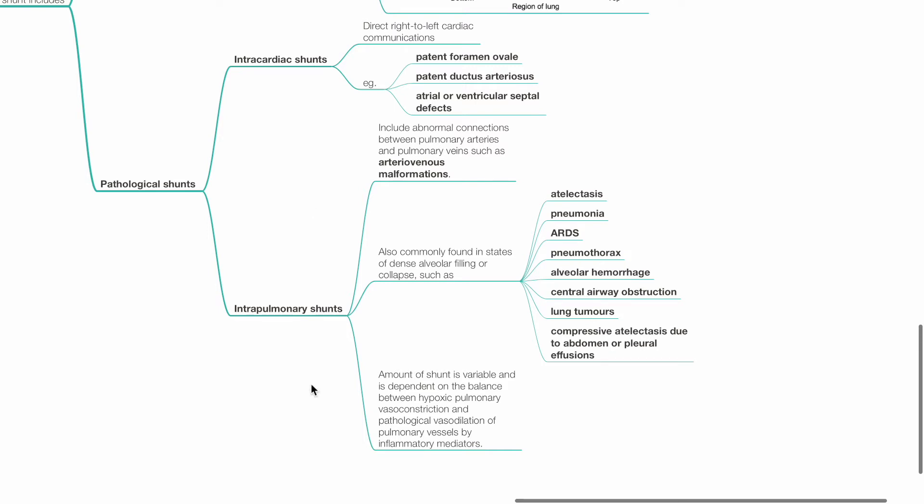The amount of intrapulmonary shunt is variable and is dependent on the balance between hypoxic pulmonary vessel constriction and pathological vasodilation of pulmonary vessels by inflammatory mediators.